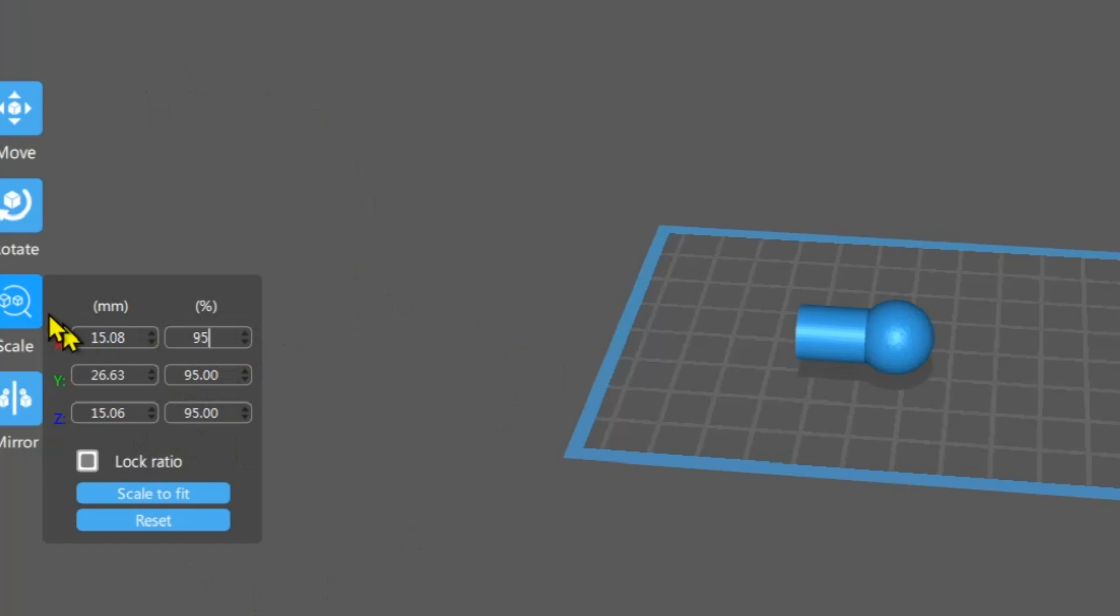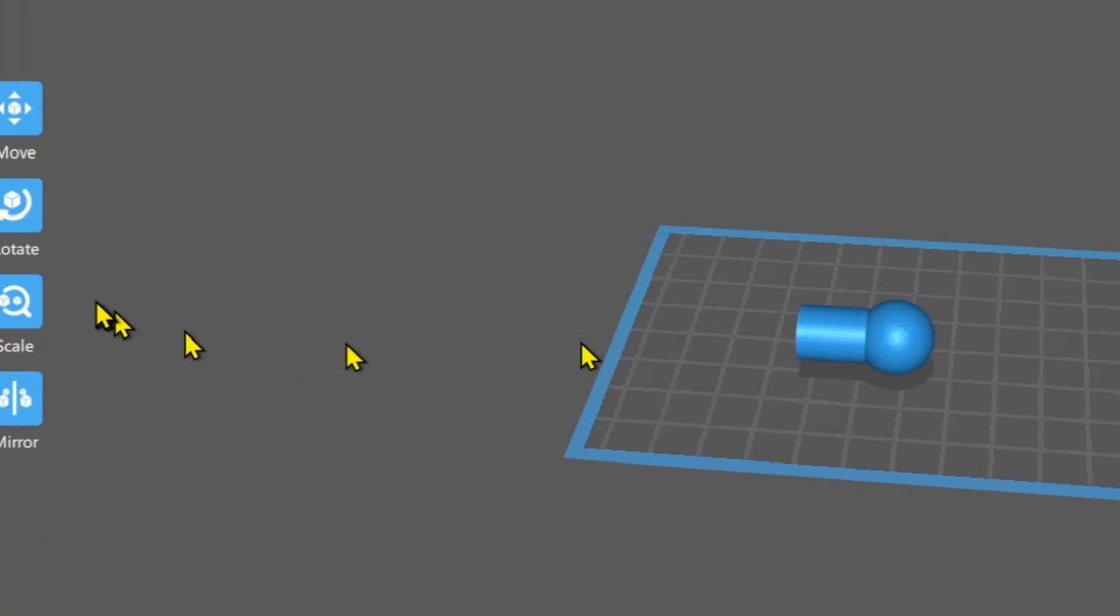So I'm over here in my scale option. I've got my lock ratio checked, 95 percent. That scales it all across X, Y, and Z.